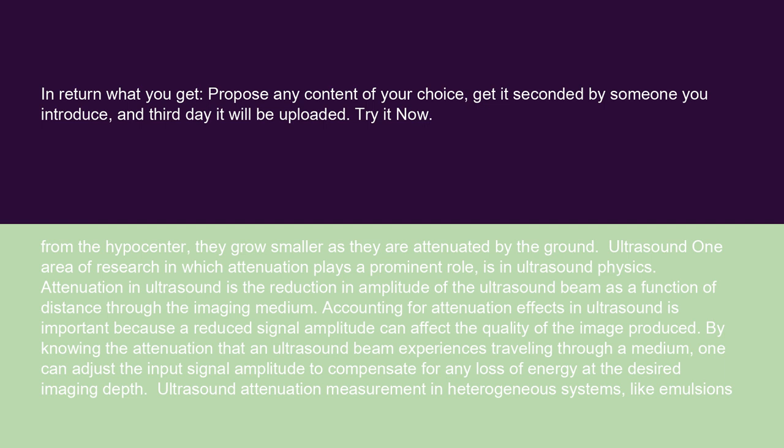One area of research in which attenuation plays a prominent role is in ultrasound physics. Attenuation in ultrasound is the reduction in amplitude of the ultrasound beam as a function of distance through the imaging medium. Accounting for attenuation effects in ultrasound is important because a reduced signal amplitude can affect the quality of the image produced. By knowing the attenuation that an ultrasound beam experiences traveling through a medium, one can adjust the input signal amplitude to compensate for any loss of energy at the desired imaging depth.